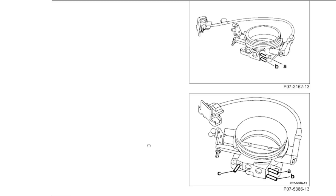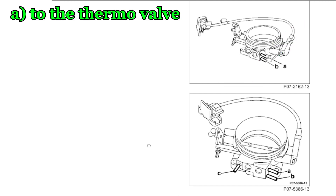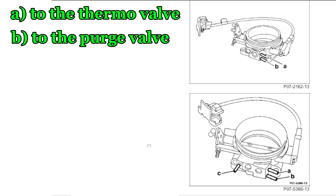This is how it looks on M103 engines. We have line A and line B. Line A goes to the thermal valve and line B goes to the purge valve for the evaporation system.